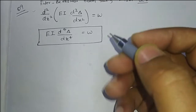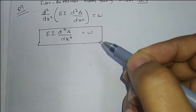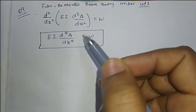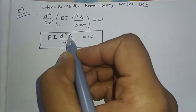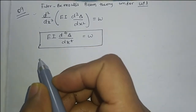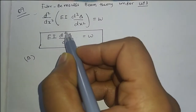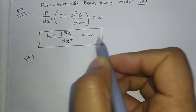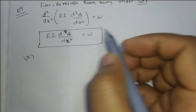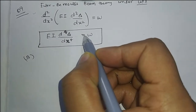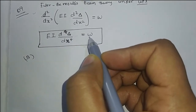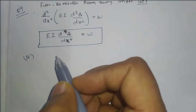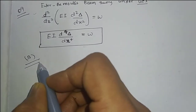Question number 9: The governing equation of the static transverse deflection of a beam under a uniformly distributed load according to the Euler-Bernoulli beam theory. Option B is the right answer because it is a fourth-order ordinary differential equation. There is no partial differentiation, and the right-hand side is a non-zero term, making it a fourth-order linear non-homogeneous ordinary differential equation.